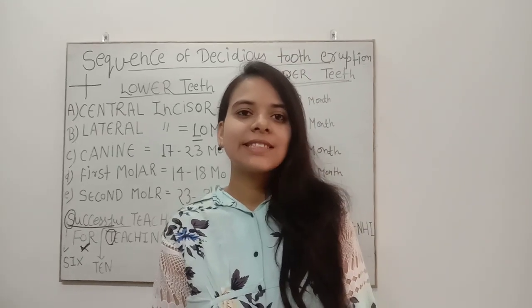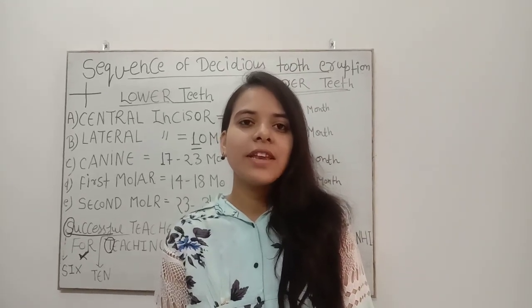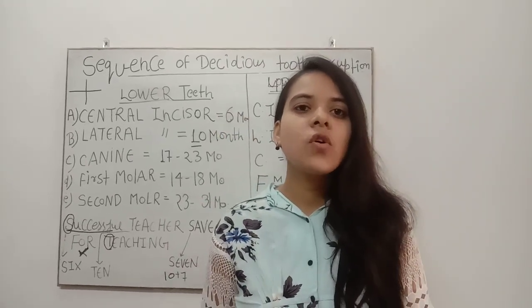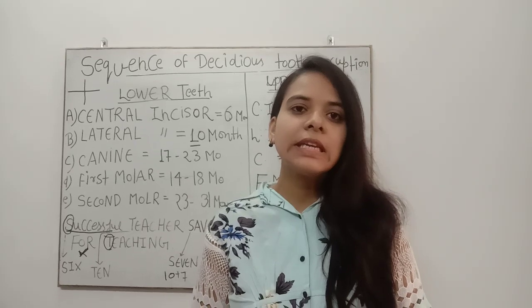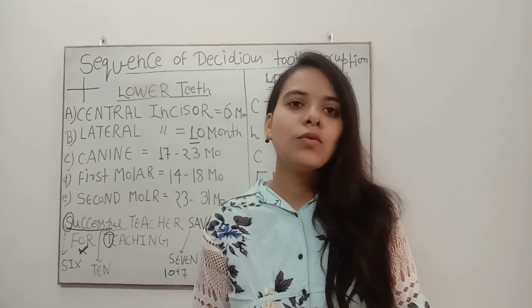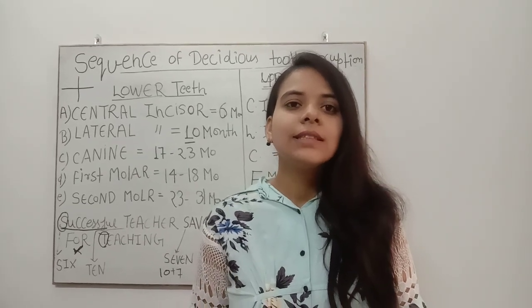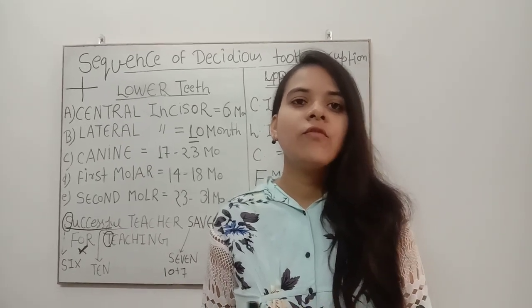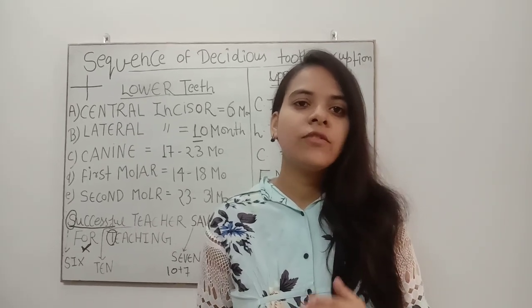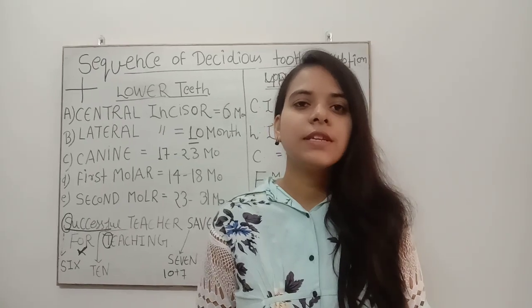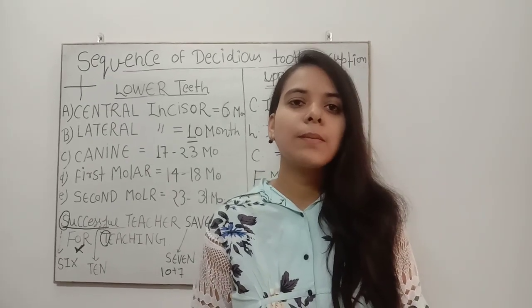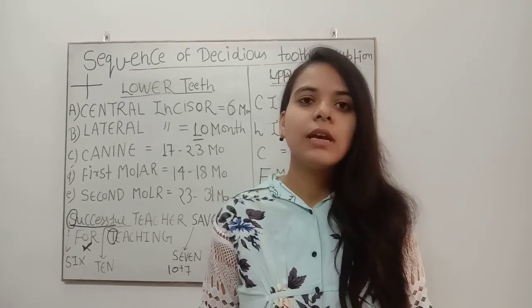Hey guys, today we are discussing about a very important topic: the sequence of tooth eruption. As we all know, humans contain two types of dentition. The first is deciduous dentition and the second one is permanent dentition.